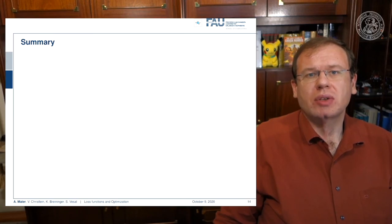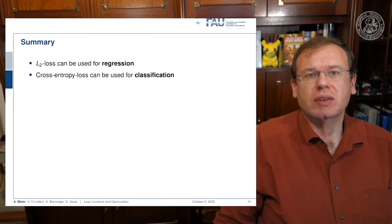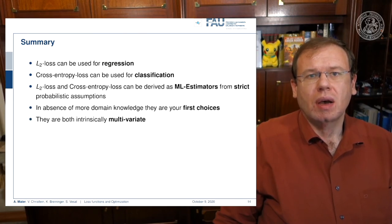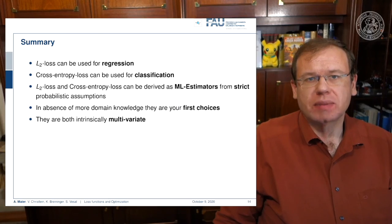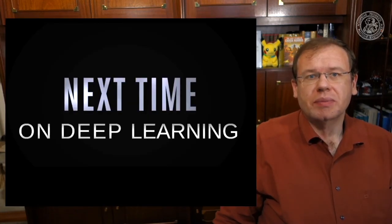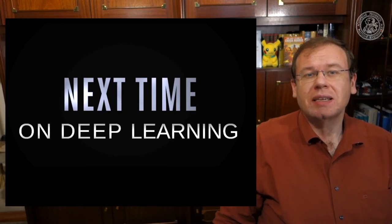Let's summarize what we've seen so far. L2 loss is typically used for regression. Cross-entropy loss is typically used for classification, typically in combination with one-hot encoding. You can derive them from ML estimators from strict probabilistic assumptions, so what we are doing here is completely in line with probability theory. In the absence of more domain knowledge, these are our first choices. If you have additional domain knowledge, it's a good idea to use it to build a better estimator. The cross-entropy loss is intrinsically multivariate, so we are not just stuck with two-class problems. We can go into multi-dimensional regression and classification problems as well.